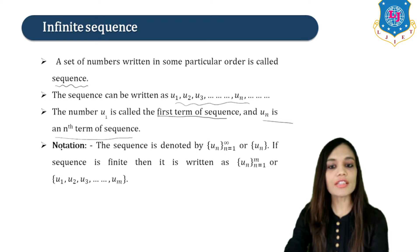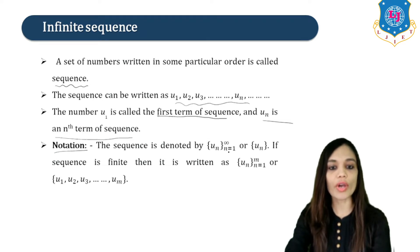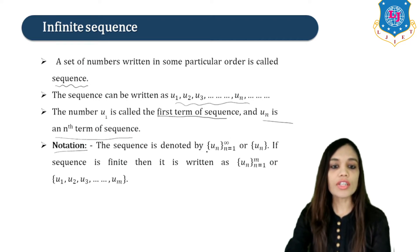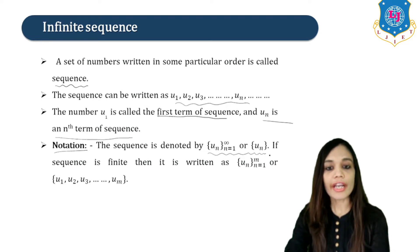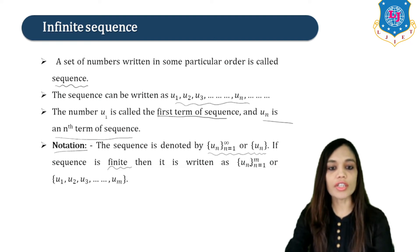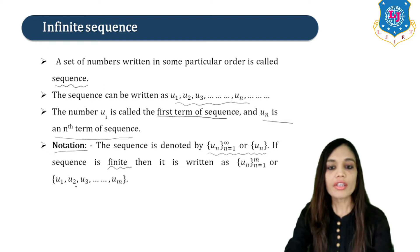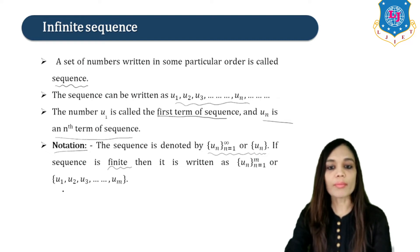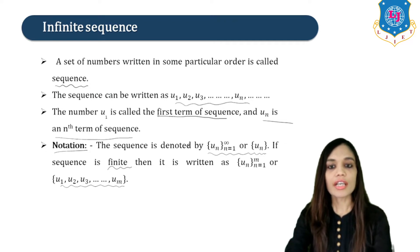Now let us study its notation. A sequence is denoted as {UN}, N=1 to infinity, or simply {UN}. These two are the notations of the sequence. If the sequence is finite, it is written as {UN}, N=1 to M, or {U1, U2, U3, ... UN}. This is known as a Finite Sequence.